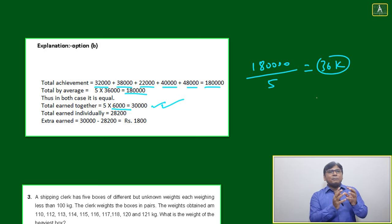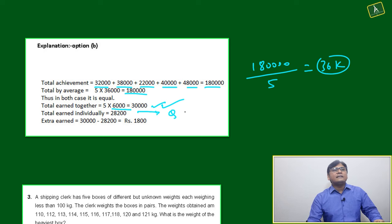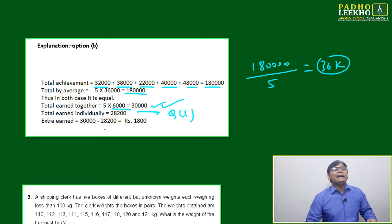You will not get any deduction. You will get the salary: 5 × 6,000 = 30,000. Total earned individually—if they are earning individually, you can take it from question number one we already calculated—is 28,200. What is the difference? 1,800.